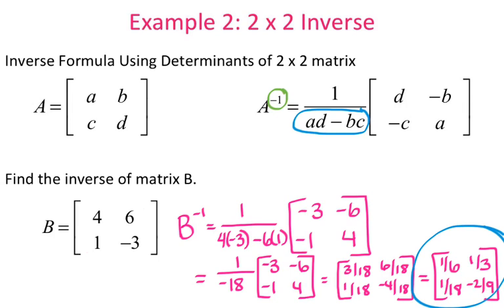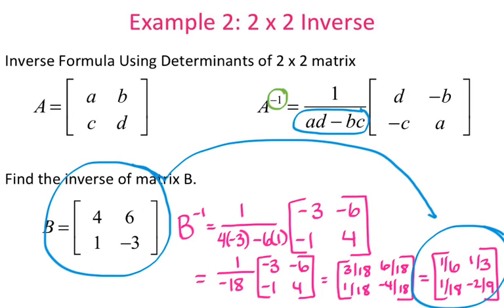There is the inverse. If you wanted to check that you found the correct inverse, you can multiply matrix B by this result, and if it gives you the identity matrix, then you got the correct inverse.